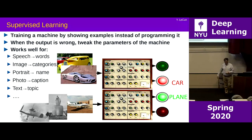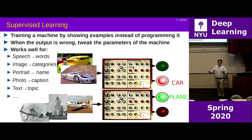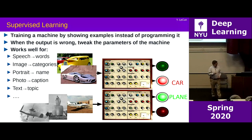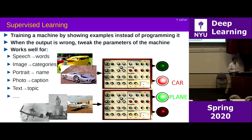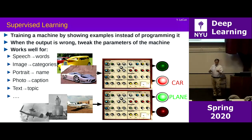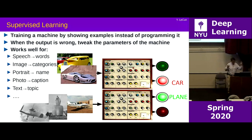Show an image of a car; if the system doesn't say 'car,' tweak the parameters. The parameters in the neural net are the weights that compute weighted sums in those simulated neurons. The trick is figuring out in which direction and by how much to tweak the parameters — that's what gradient computation and backpropagation is about.